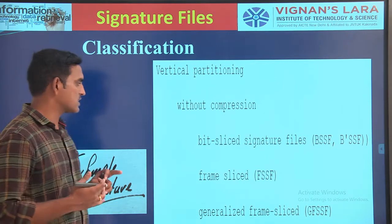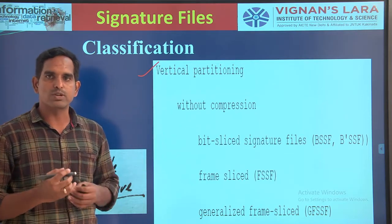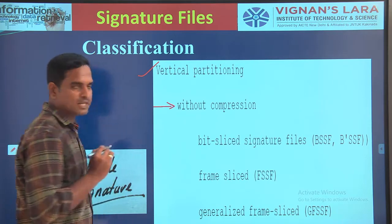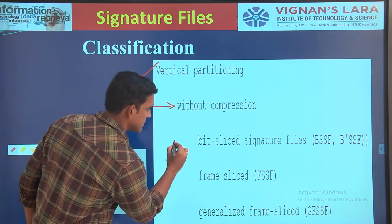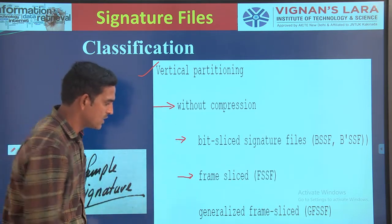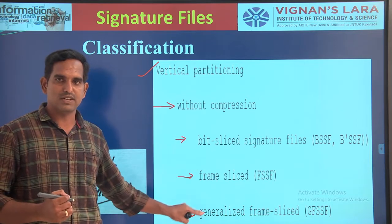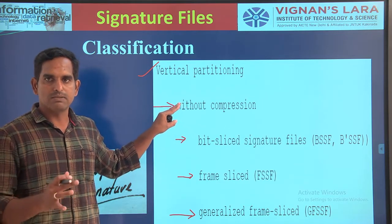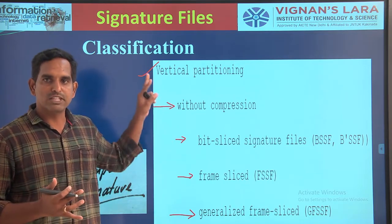This is the second classification part where you implement vertical partitioning — storing your file in column-major order. Inside the vertical partitioning, if you don't implement compression, such files are three things: bit sliced signature files (BSSF), frame slices, and generalized frame slices. These are three different signature file implementations which implement vertical partitioning without compression. These are the modifications of your sequential signature files without compression and with vertical partitioning.